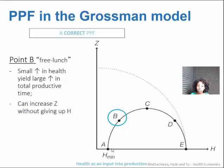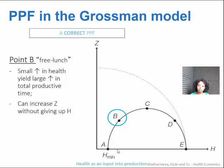If you decide to invest a little bit more in your h, you're getting a lot more on the y-axis of z back. This is why this area is called the free lunch zone. Investing just a little bit more in your health can yield really large increases in your total productive time, so you can increase z without having to give up h at that point. That's why it's called a free lunch.